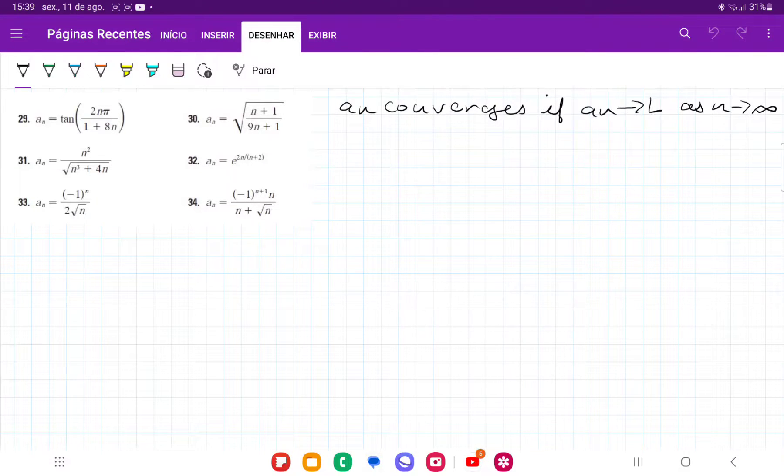So for number 32, we want to see if the sequence right here converges. A sequence a_n converges if a_n tends to a specific limit as n approaches infinity.